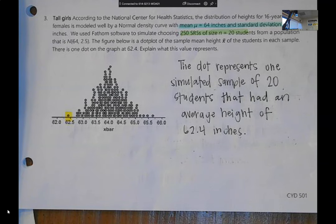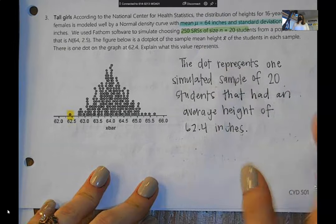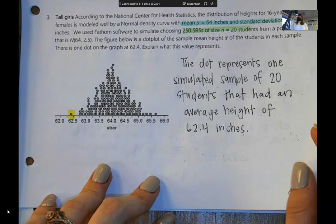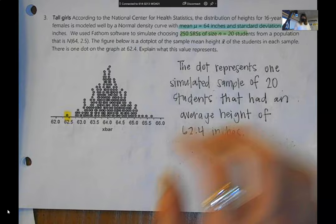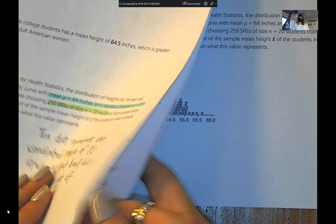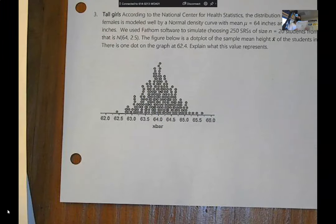You could say the dot represents one simulated sample of 20 students that had an average height of 62.4 inches. So one thing that you may not have added in is this simulated sample part. When we talk about a sampling distribution, a lot of the times to get that sampling distribution, the ones we talk about in class, they're computer simulated.